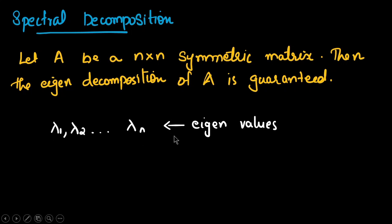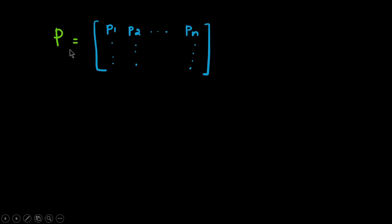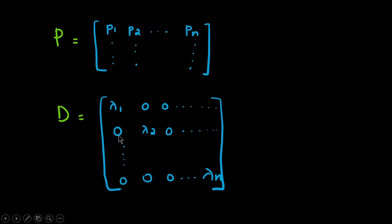Let lambda 1, lambda 2, ..., lambda n be the eigenvalues, and let P1, P2, ..., Pn be the eigenvectors. Then P is a matrix where each column represents an eigenvector: the first column is P1, the second column is P2, and so on up to Pn. D is represented as a diagonal matrix with the eigenvalues lambda 1, lambda 2, ..., lambda n along the diagonal and zeros elsewhere.